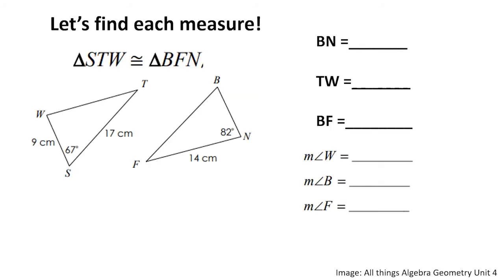For this last problem, we want to find the measures of each angle and the lengths of each side. Let's fill in the angles on the triangles first, then the sides. We see a 67-degree angle — that is angle S — which is congruent to angle B, so angle B is also 67 degrees. Angle N is 82 degrees and is congruent to angle W, so angle W is also 82 degrees.